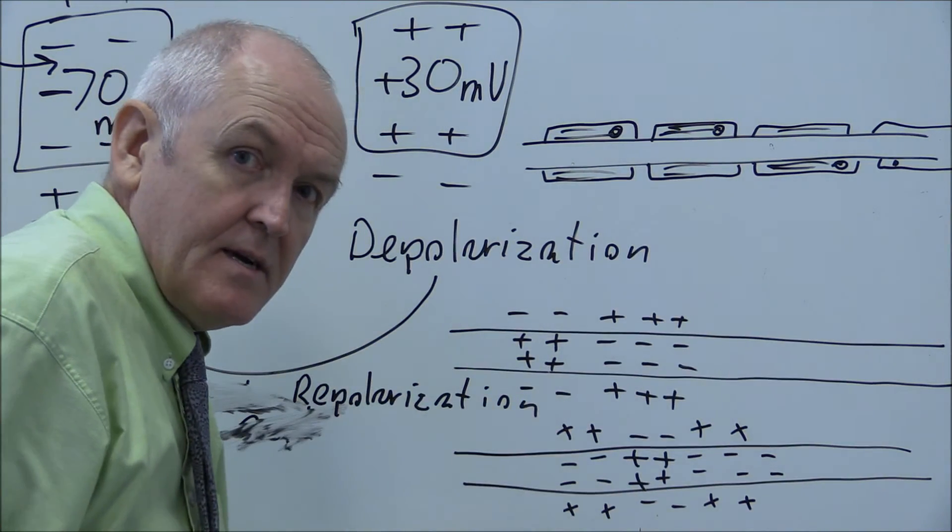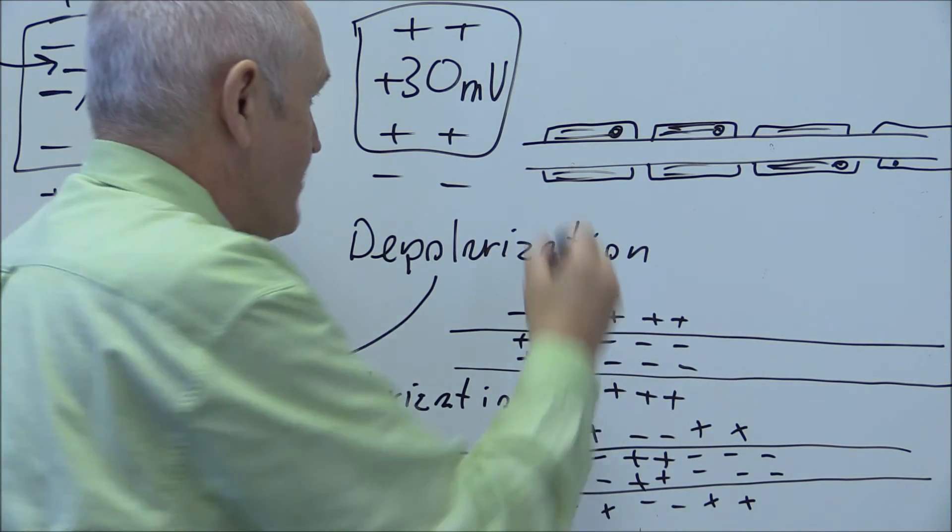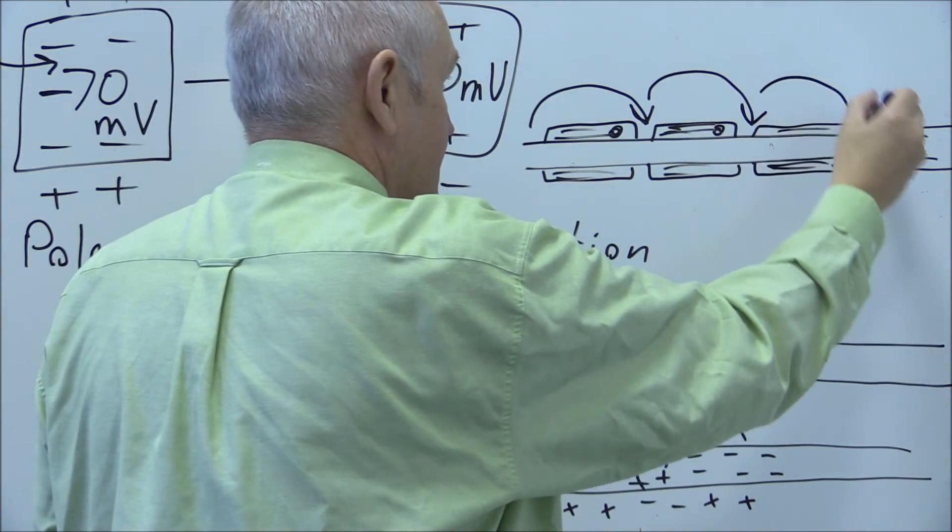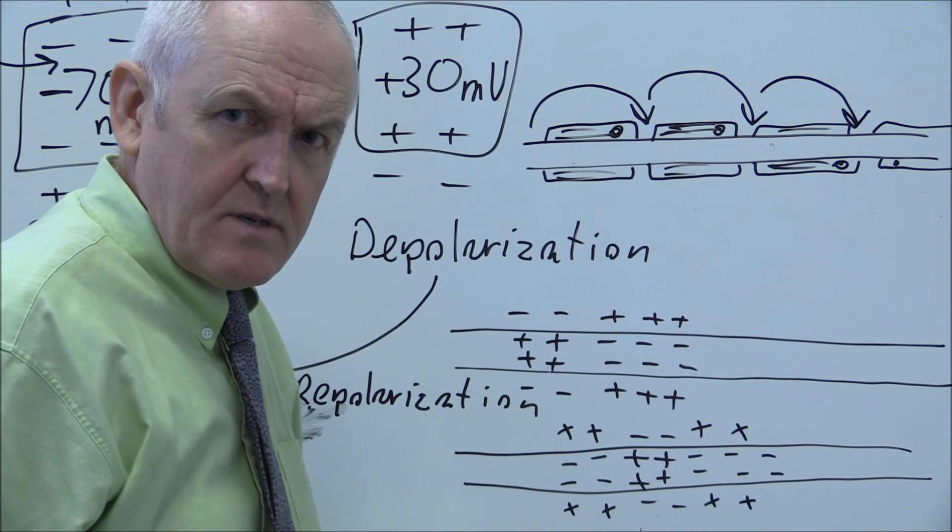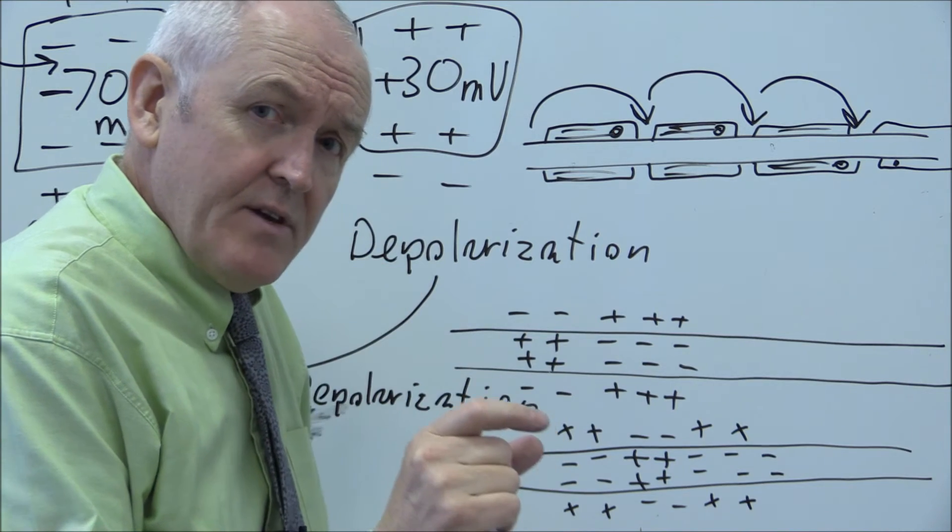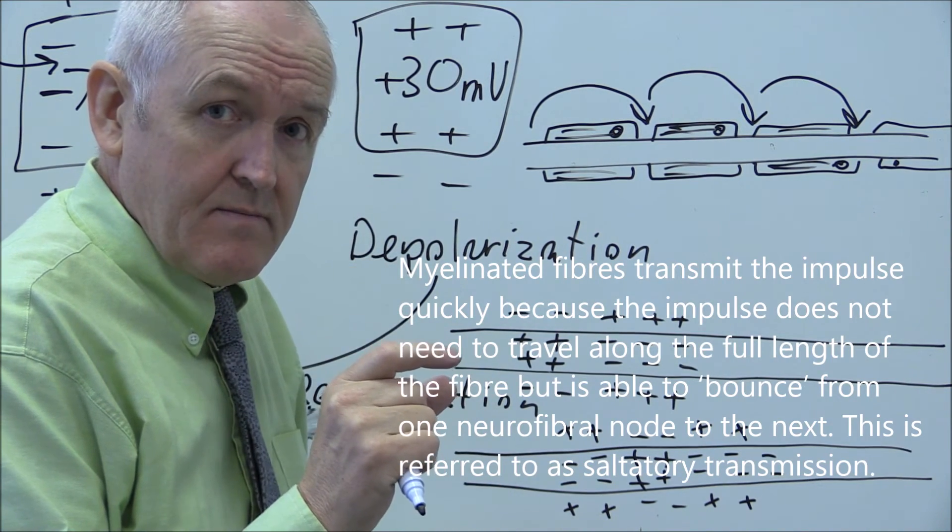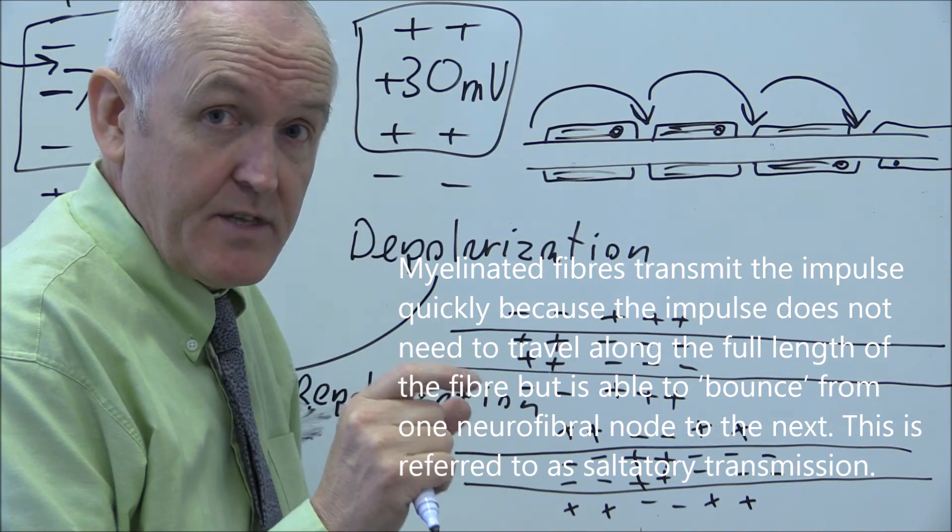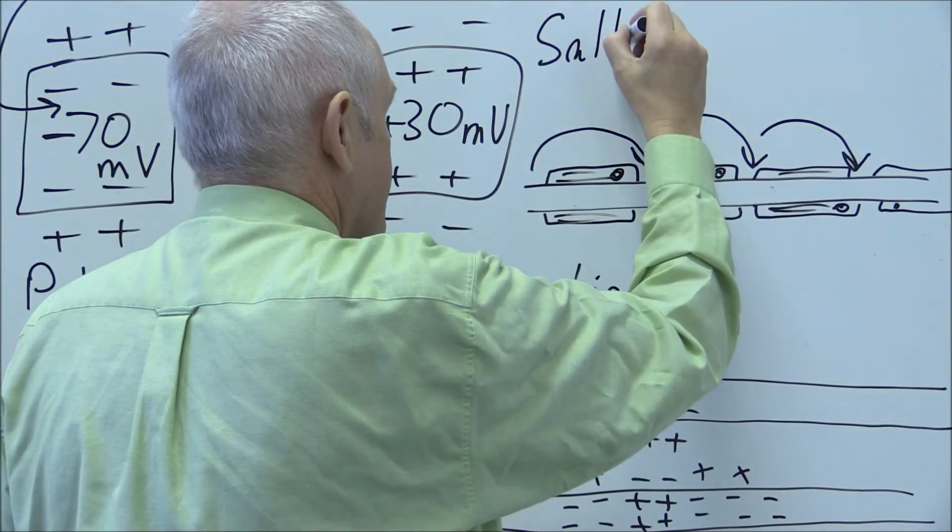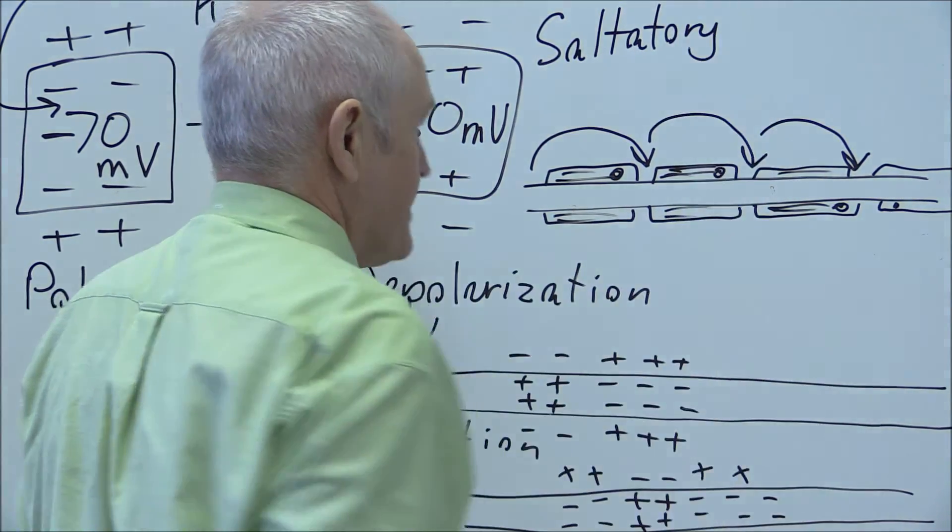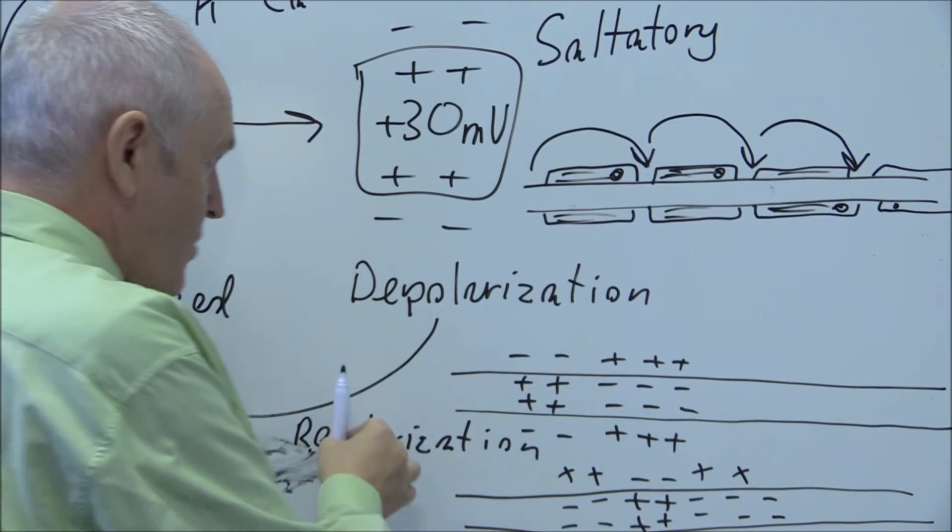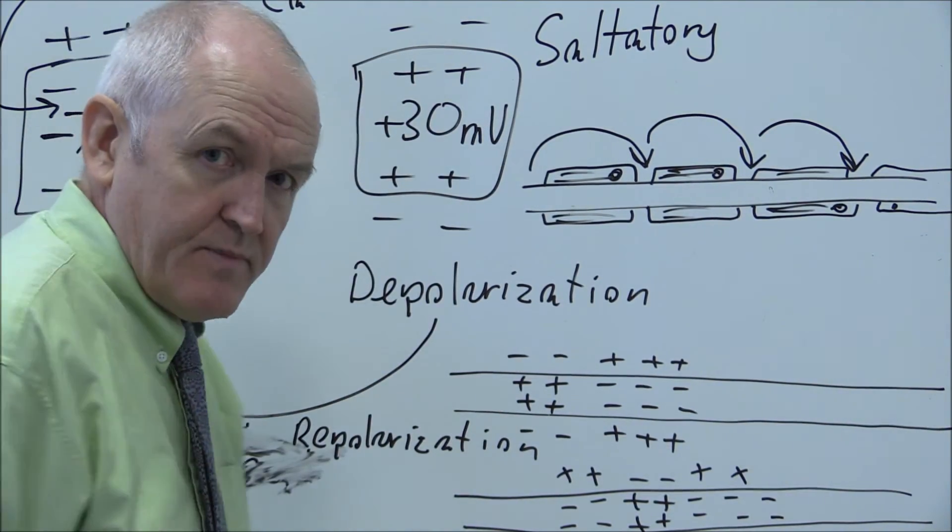What happens is that the area of depolarization bounces from one neurofibral node, or the nodes of Ranvier to the next. Neurofibral nodes and the nodes of Ranvier are exactly the same thing. They are the gaps in the nerve fibers between the Schwann cells, between the myelin sheath cells. That's called saltatory transmission. And it's way faster. It can be 100 meters per second or faster, as opposed to the slower waves of depolarization, which are only a meter or two per second.